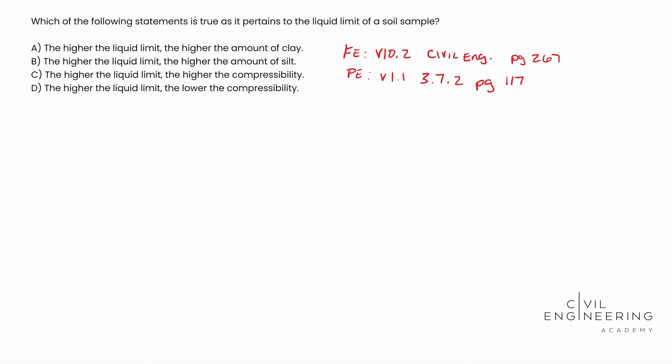You have this Casa Grande apparatus and grooving tool, and basically you click this thing until the groove in the middle collapses, or I think it's like a half an inch or something. Half an inch of that groove is taken away from soil. The soil falls down. And basically it measures the moisture content at which the sample begins to behave as a liquid at 25 blows.